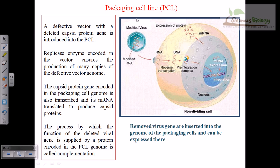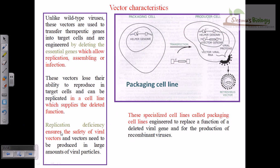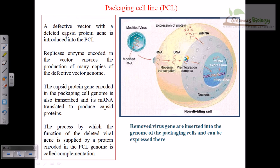Replicase enzymes encoded in the vector ensure the production of many copies of the defective vector's genome. A defective vector with a deleted capsid protein gene is introduced into the packaging cell line (PCL). The replicase enzyme ensures many copies of the defective vector's genome are made. Then the capsid protein gene encoded in the packaging cell genome is transcribed and its mRNA translated to produce the capsid proteins, which will coat the gene of interest along with the viral genome, and the packaging virus will be produced.